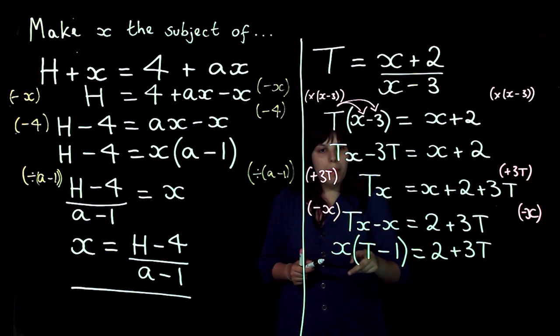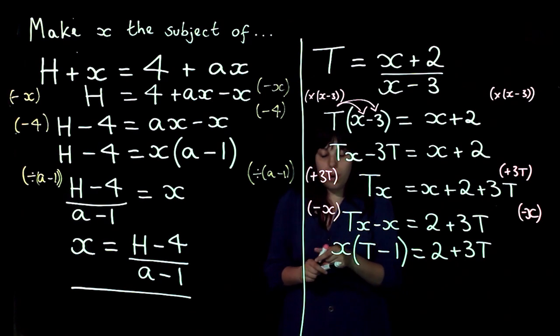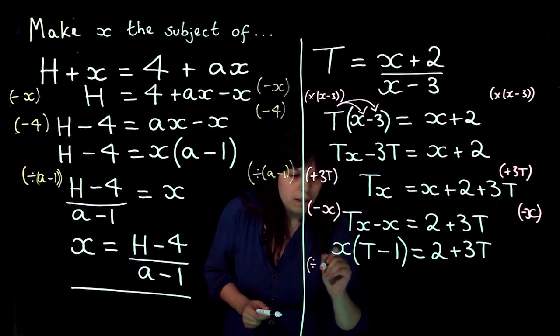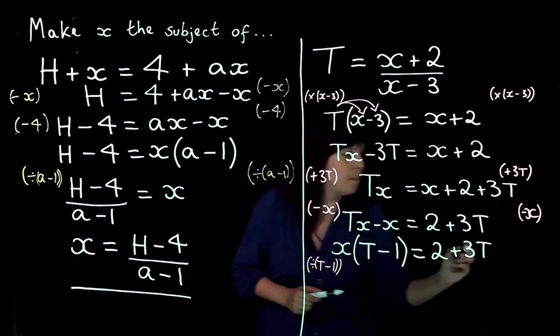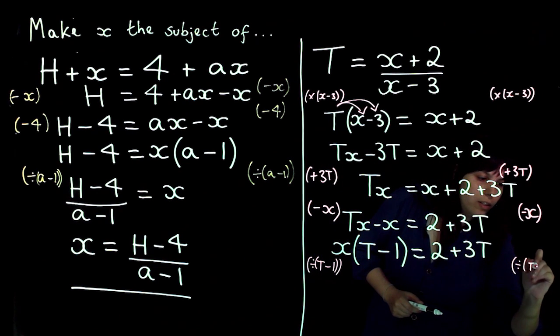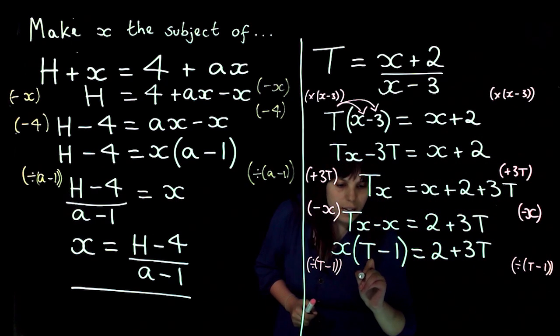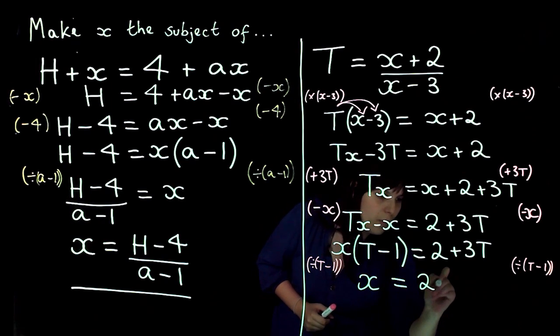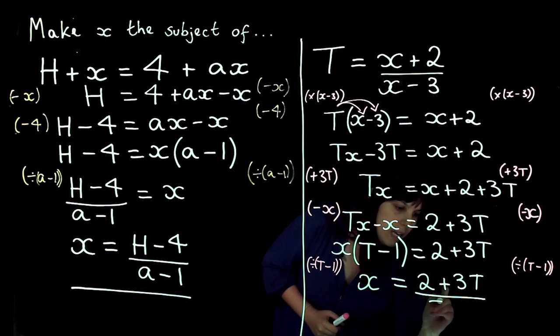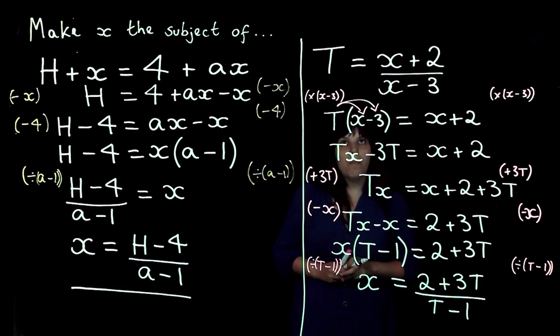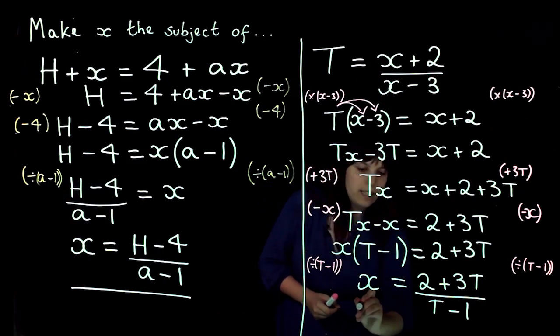And then my last step is I'm currently multiplying my x by t minus 1. So I'm going to divide by t minus 1 on both sides just to get rid of it and to get my x on its own. So I end up with x equals 2 plus 3t divided by t minus 1. And that is my first equation rearranged to get x as the subject.